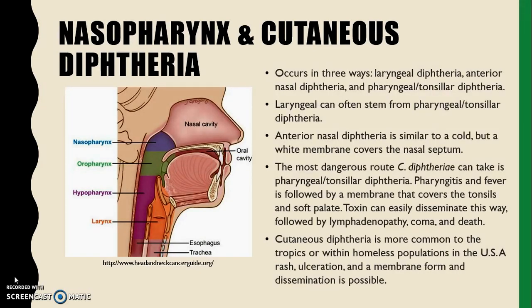Diphtheria of the nasopharynx typically manifests in three ways: laryngeal diphtheria, anterior nasal diphtheria, and pharyngeal and tonsillar diphtheria. In laryngeal diphtheria, there are many cases where it spawns from pharyngeal diphtheria.